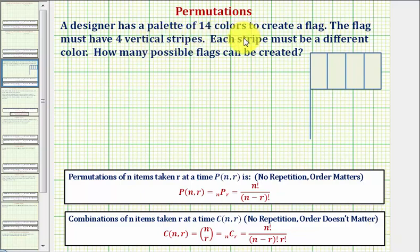A designer has a pallet of 14 colors to create a flag. The flag must have four vertical stripes as pictured here. Each stripe must be a different color. How many possible flags can be created?